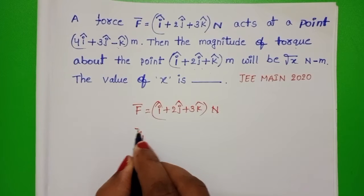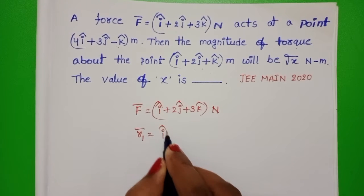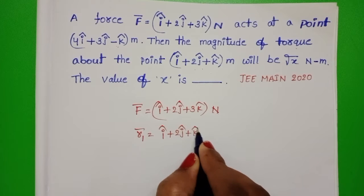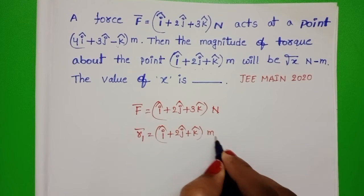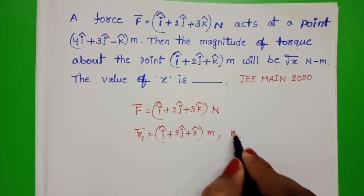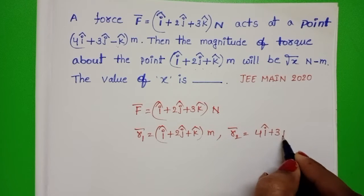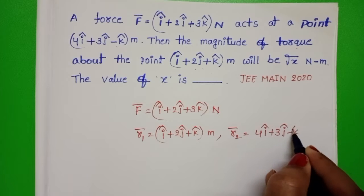So, R1 bar equals i cap plus 2 j cap plus k cap meter, and R2 bar equals 4 i cap plus 3 j cap minus k cap meter.